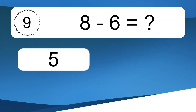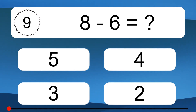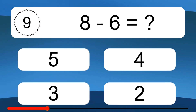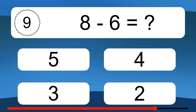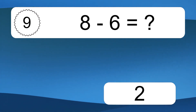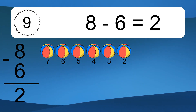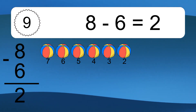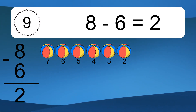8 minus 6 equals what? 8 minus 6 equals 2. Let's count it: 7, 6, 5, 4, 3, 2.